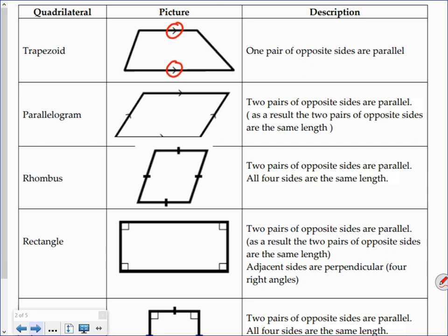Moving on, we have a parallelogram. The defining characteristic of a parallelogram is that two pairs of opposite sides are parallel to each other — this side and this side are parallel, and this side and this side are parallel. As a result, the sides opposite each other are the same length, so this side and this side are the same length, and this side and this side are the same length.